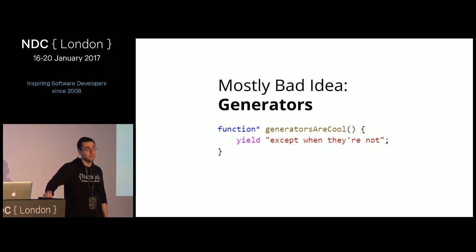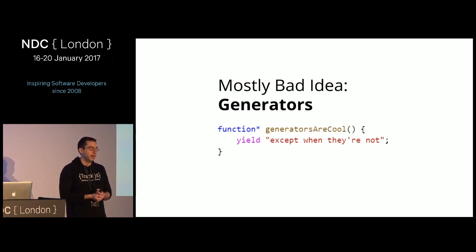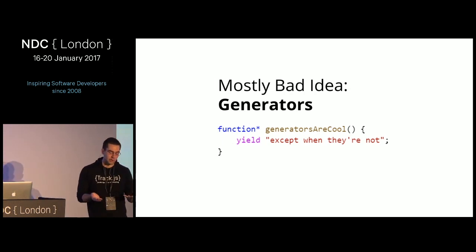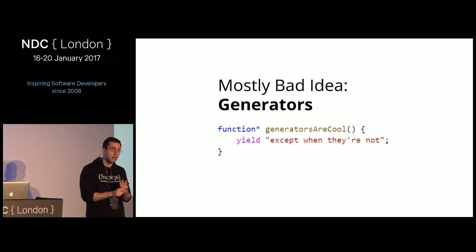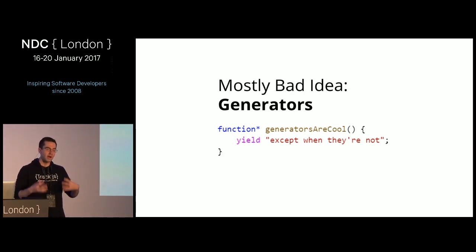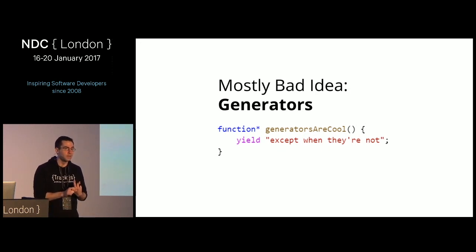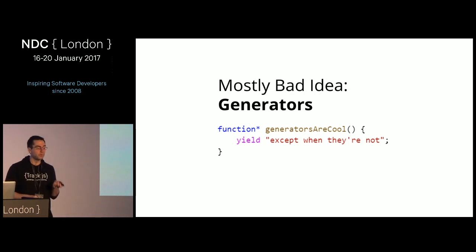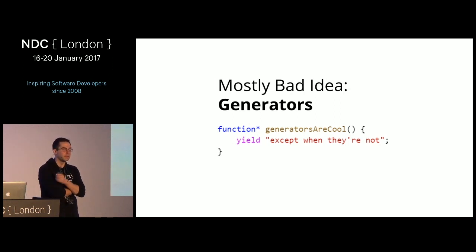Another idea for async is generators, which are very similar to the yield keyword in C#. Generators are actually pretty good for async in small doses. But there are frameworks like Koa on the Node side that use generators for absolutely everything — and generators can be very painful to debug, and generator support isn't 100% in the language with some weird edge cases and bugs. I think generators are going to be proven a bad idea because new things coming will supplant them.